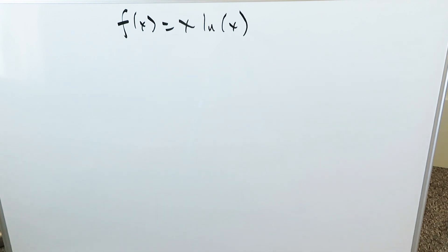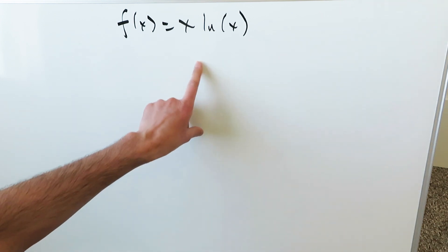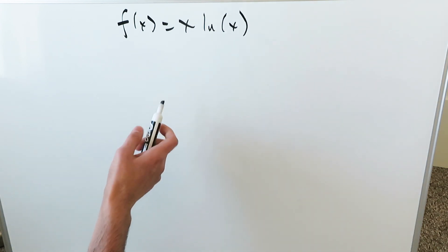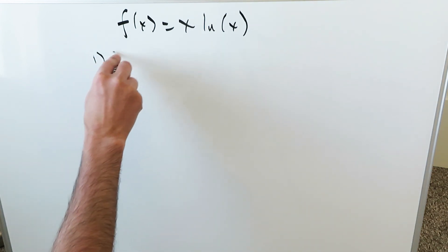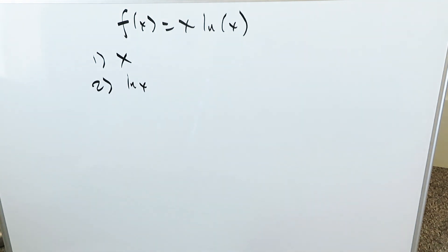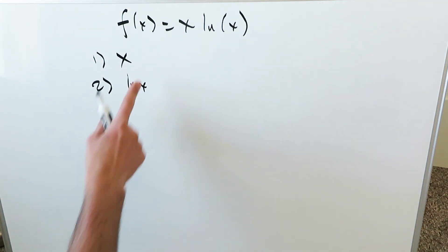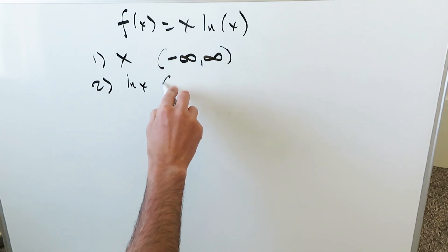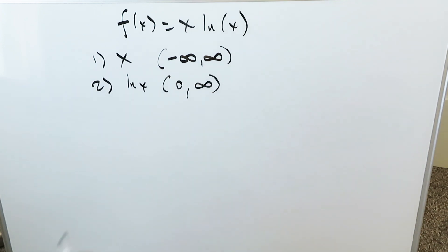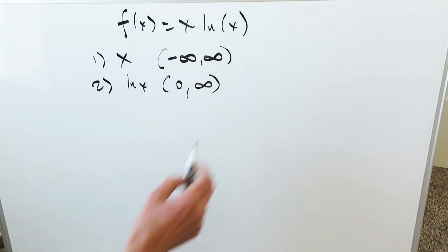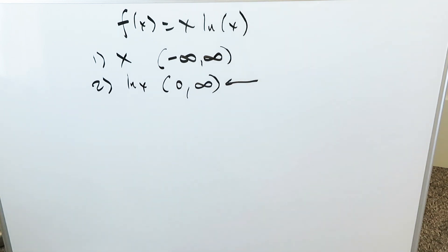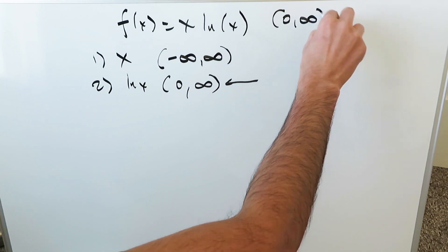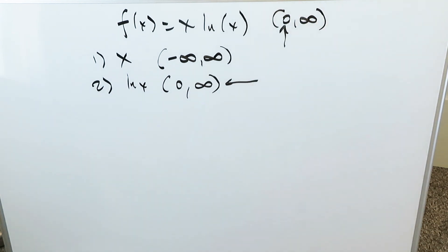How can we graph it and not miss out on any of the key features involved in this function? It's made of two different functions — it's a product. The domain of x is minus infinity to infinity. However, the domain of natural log x is zero to infinity. When you combine both into the product x natural log x, the natural log will constrain the domain to zero to infinity, but we need to verify this value.